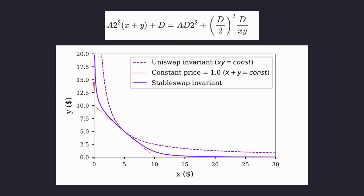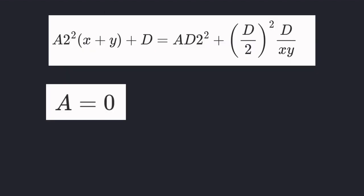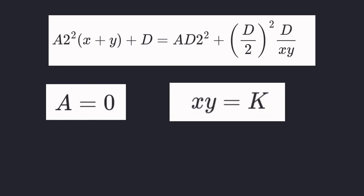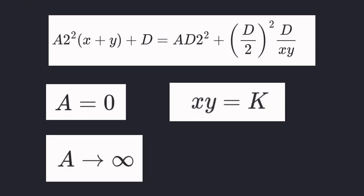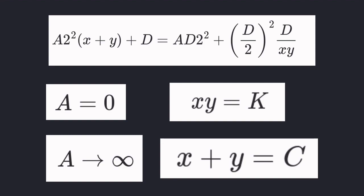Graphing this equation, you'll get the curve used in curve finance. When a is equal to zero, you'll get the constant product curve. And when a is big, you'll get the constant sum curve.